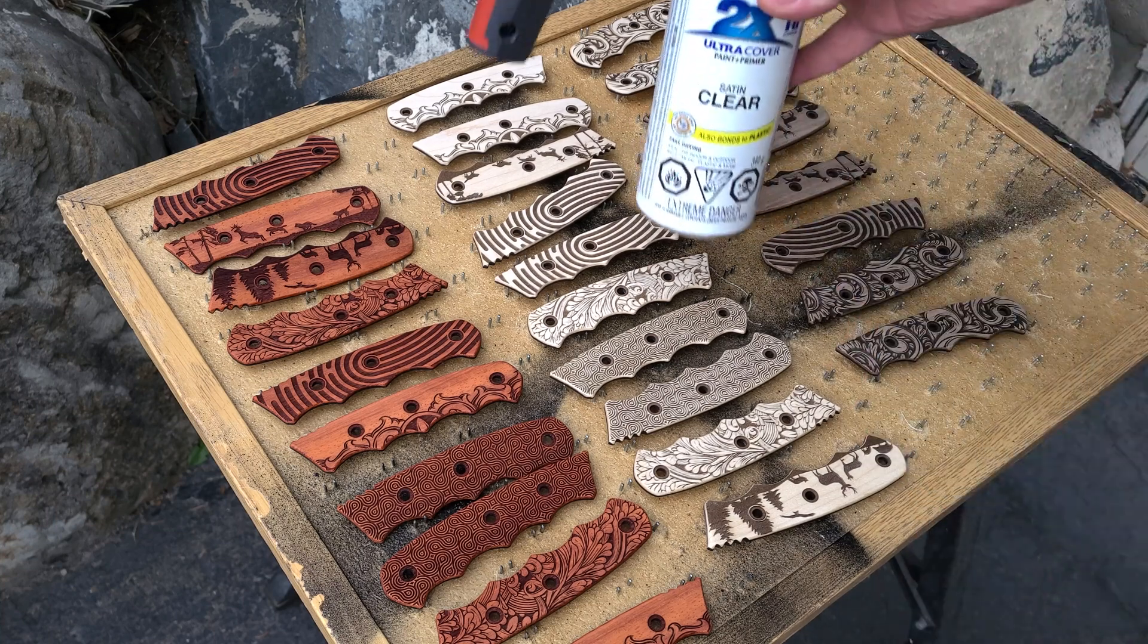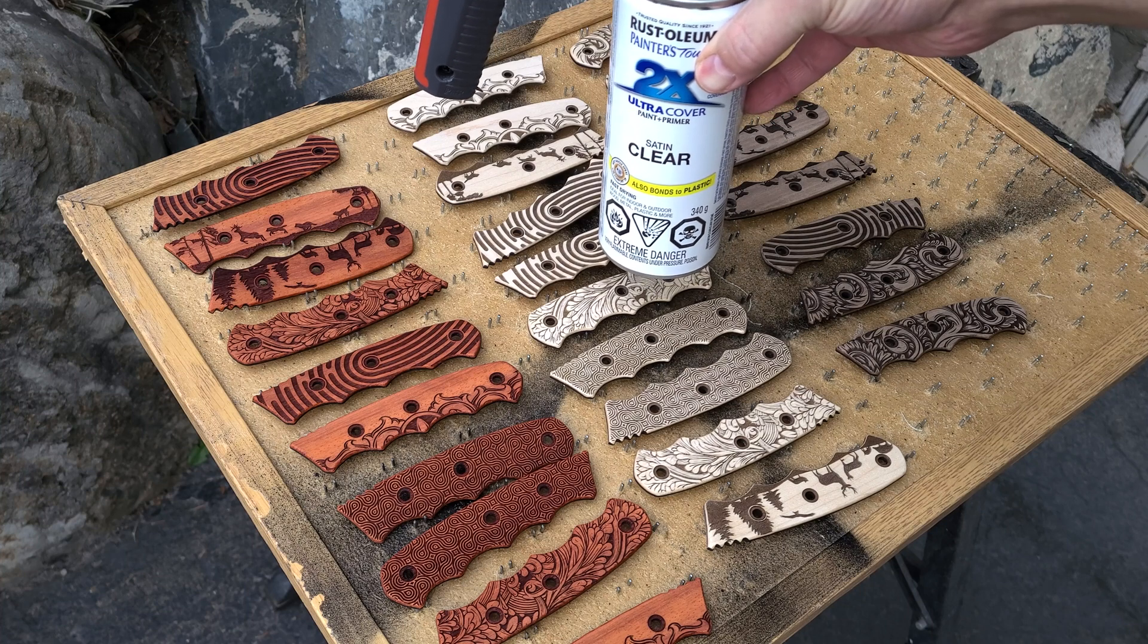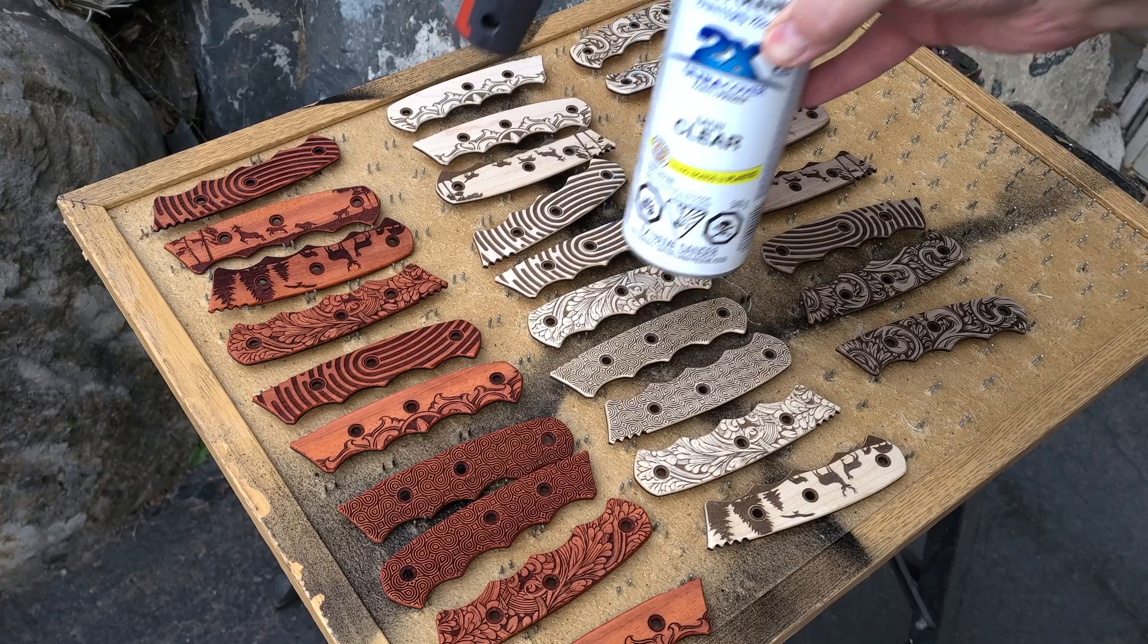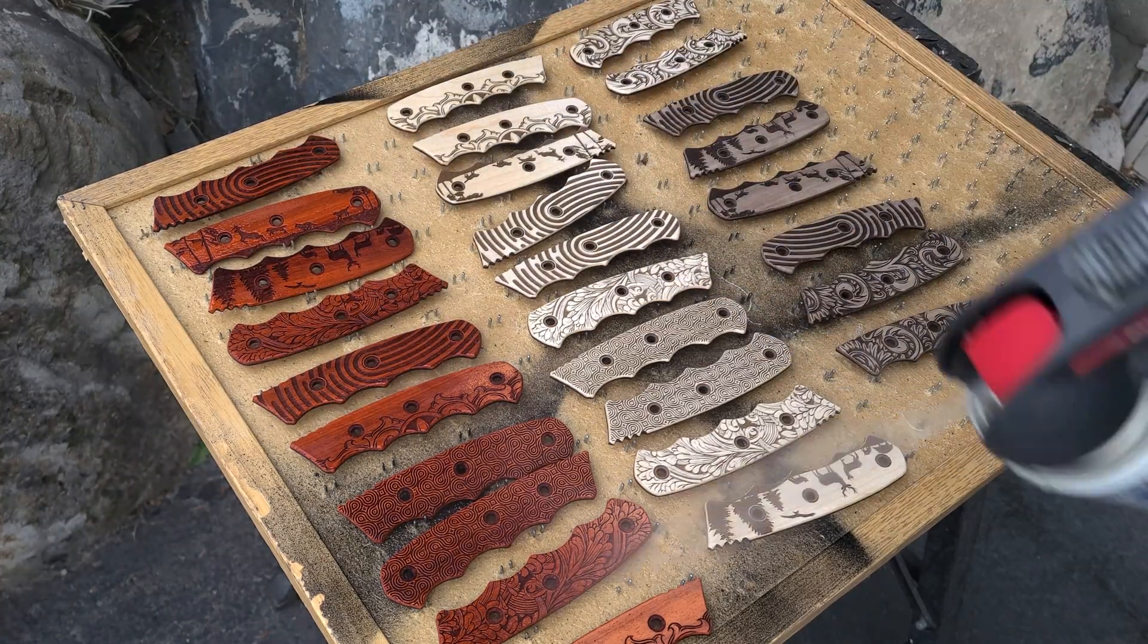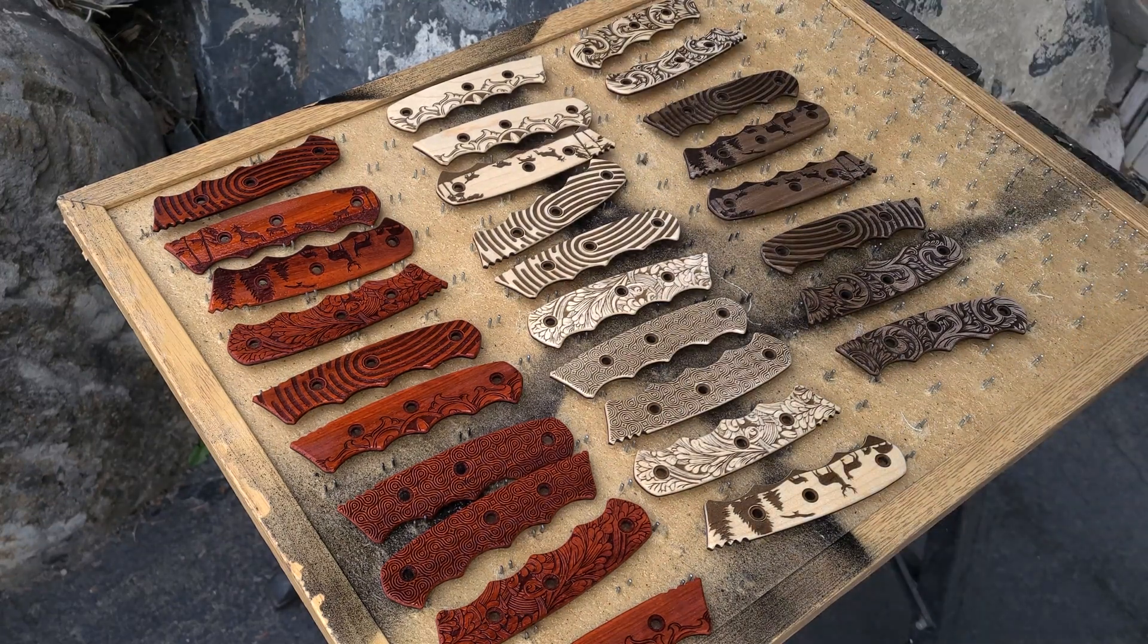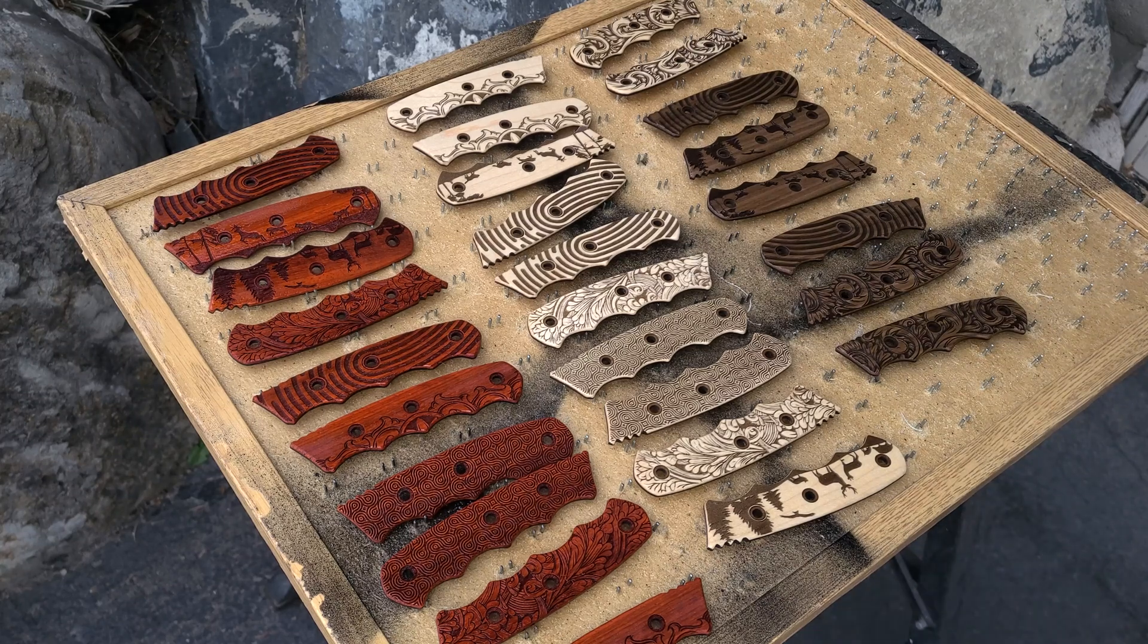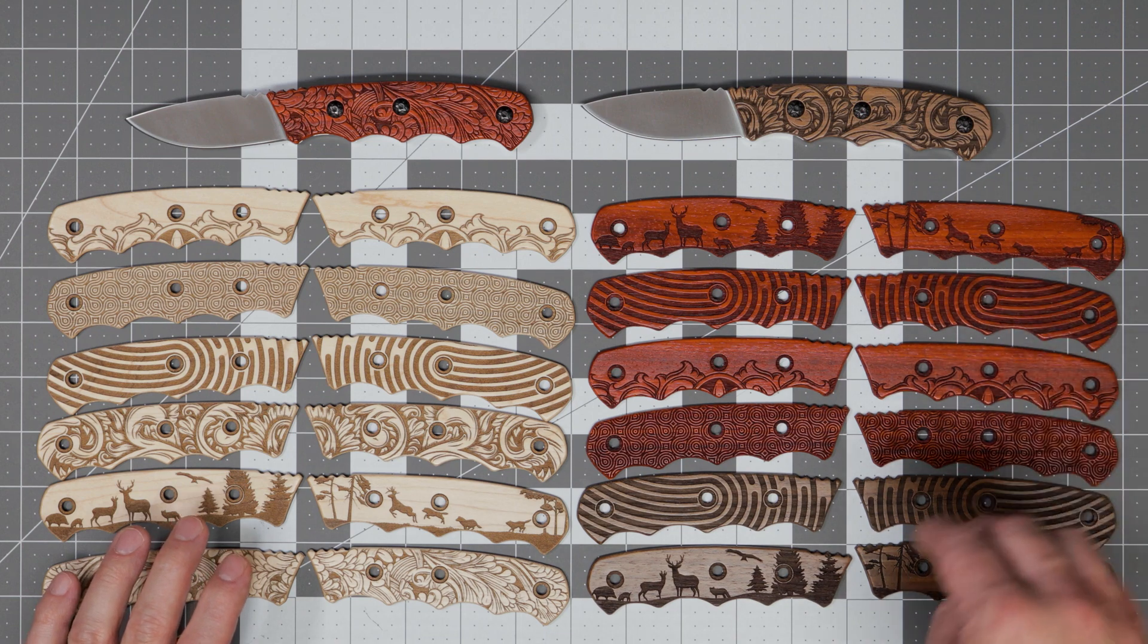Once the scales have been sanded, the final step is to give them some sort of protective clear coat. For this I'll be using Painters Touch Clear Satin. I chose a spray for these scales simply for the ease of application.